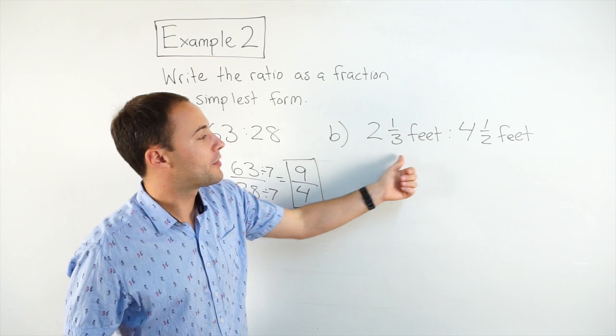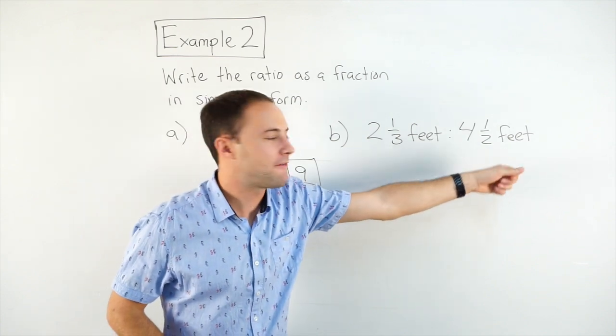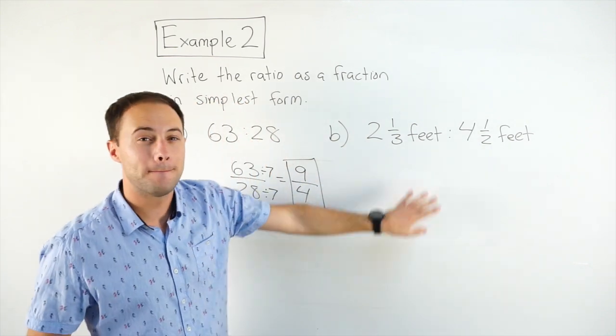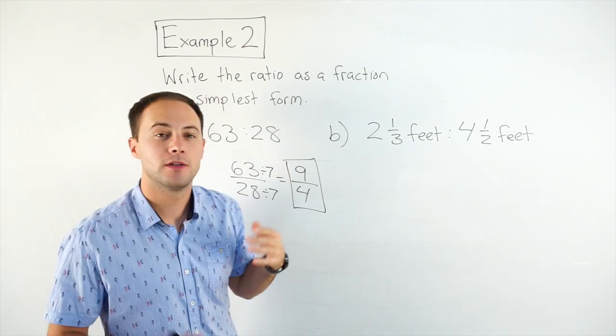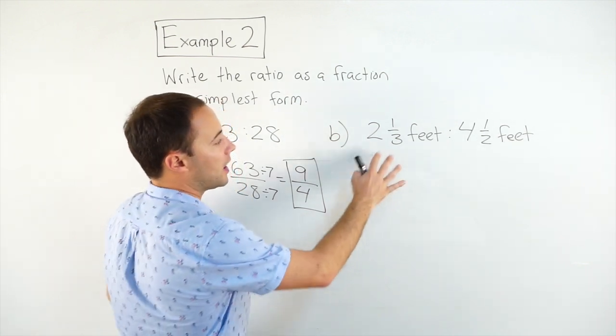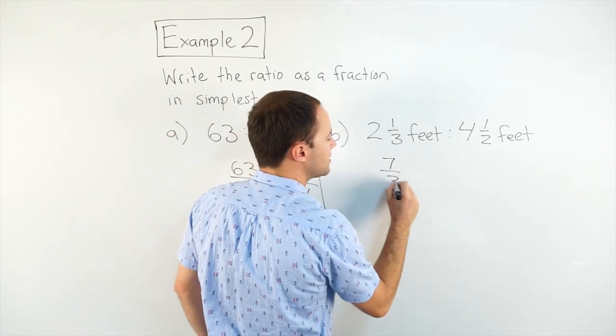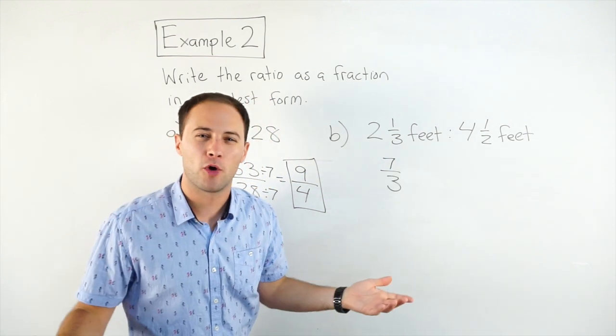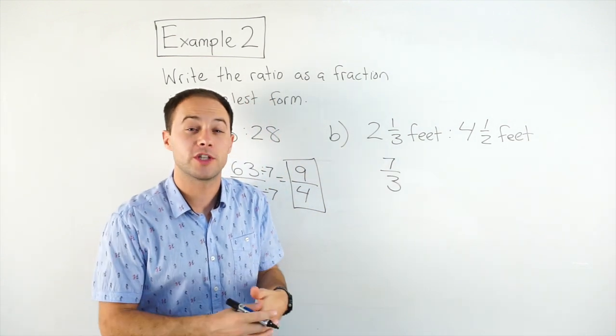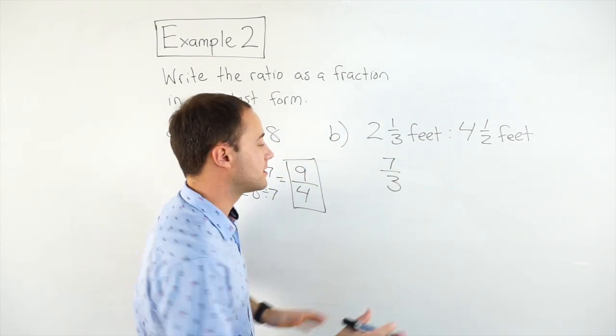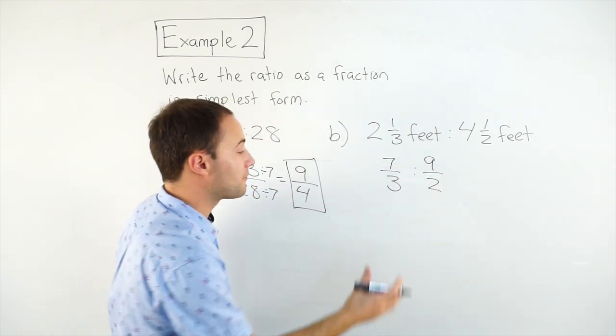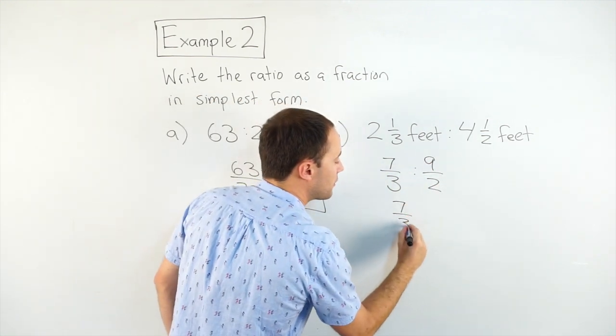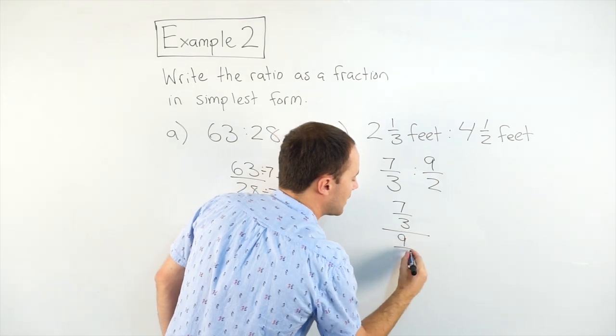Part B, 2 and 1/3 feet to 4 and 1/2 feet. Now here we've got mixed numbers. So my first step is going to change them to improper fractions. So this becomes 7/3. I don't need the feet anymore. Because we're just doing a ratio. We're just doing the quantities. So no units. To 9/2. And again, I'm going to write that as a fraction. 7/3 over 9/2.